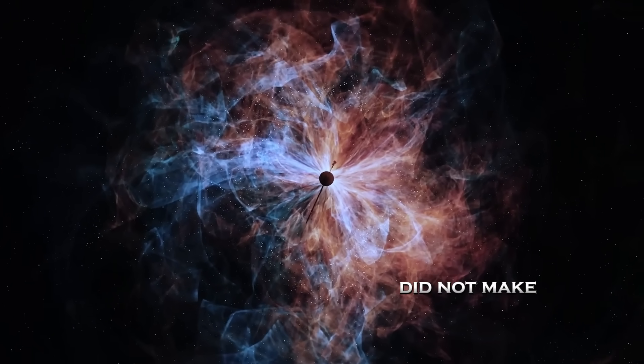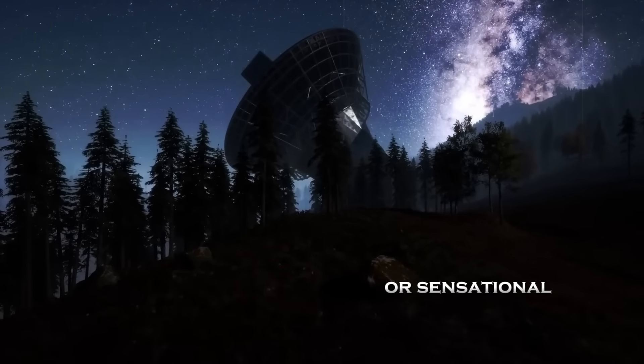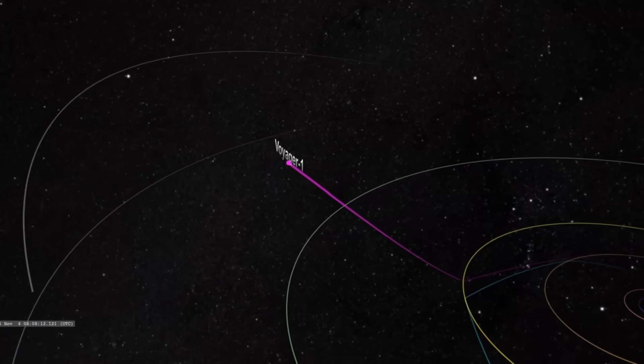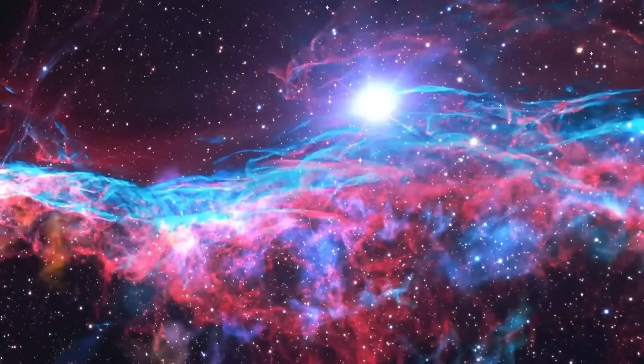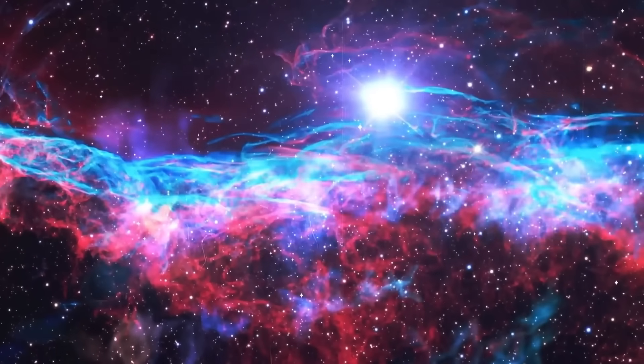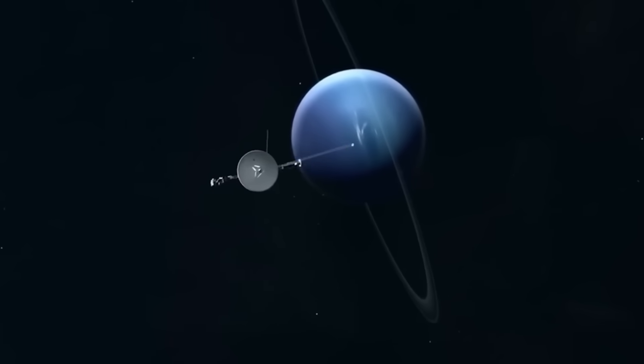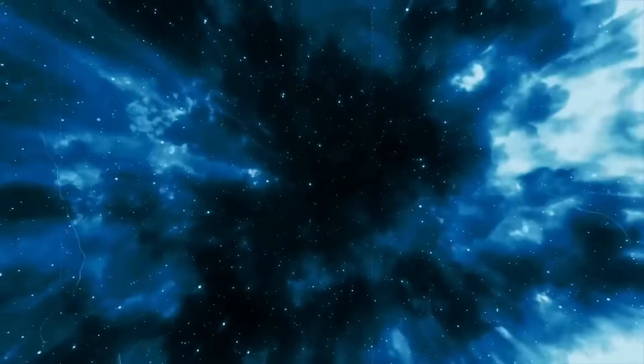Voyager 1 did not make an impossible discovery because it found something supernatural or sensational. It made an impossible discovery because it survived long enough to prove that our certainty was premature. After 45 years in space, operating with outdated technology, fading power, and no possibility of repair, Voyager 1 is still delivering something far more valuable than images or numbers. It is delivering doubt.